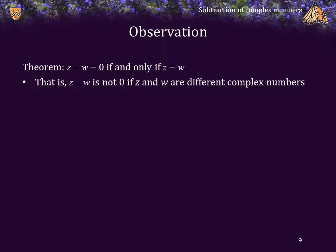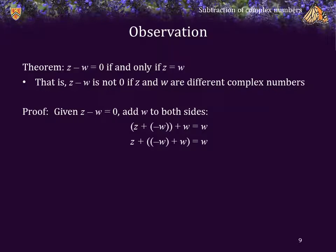Theorem: z minus w equals 0 if and only if z equals w. That is, if z minus w is not 0, then w and z must be two different complex numbers. Again, the proof is easy enough. Given the expression z minus w equaling 0, we just add w to both sides. But wait a second, complex addition is associative, so not a problem. So we can rewrite it as follows. And well, that's just z plus 0, and so therefore z is equal to w.